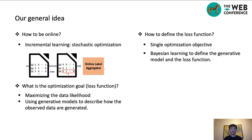The general idea of this paper is as follows. We use stochastic optimization to train our model so as to make it work in an online setting. We also use generative models to describe how the observed data are generated. The optimization goal is to maximize the data likelihood. To define the loss function, we need a single optimization objective, which means we cannot use algorithms like EM or min-max that have multiple optimization steps. So in this paper, we apply Bayesian learning to define the generative model and the loss function.